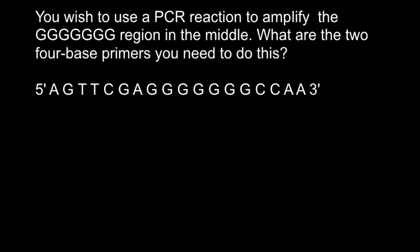Here's the problem: you wish to use a PCR reaction to amplify the sequence in the middle — this region here. What are the two four-base primers you need to do this? We have a single strand of DNA, and as you know, in a PCR reaction we need two strands of DNA in order to amplify whatever sequence we need, so we have to build a second strand of the DNA. We need two primers for the PCR reaction.